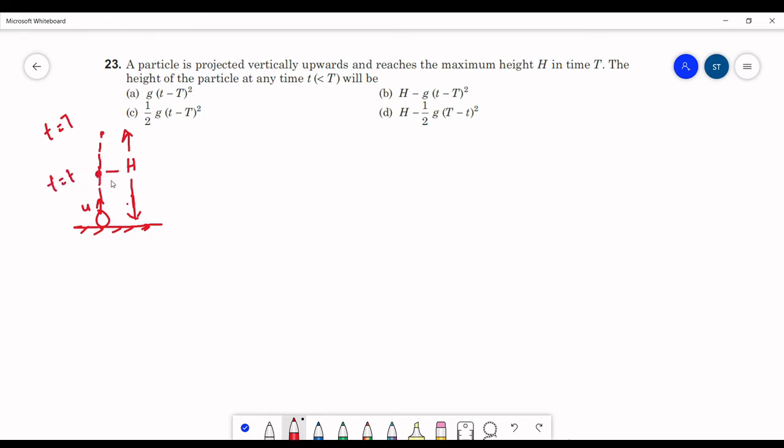Now we have to find out this height. Let us assume this as small h. If I am able to calculate this distance, then small h can be written as capital H minus this distance. I will try to calculate this distance. I am taking this as x.